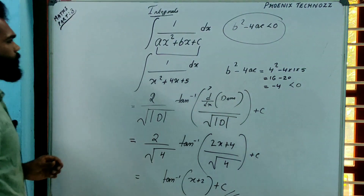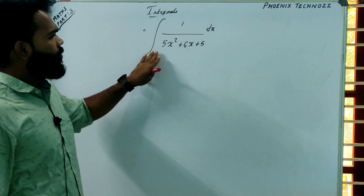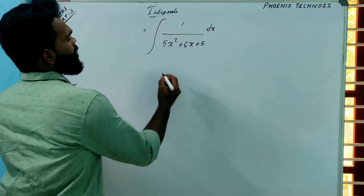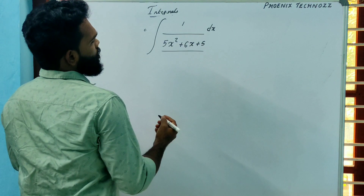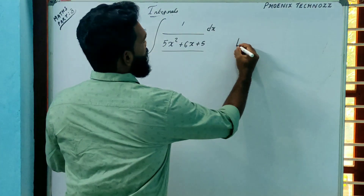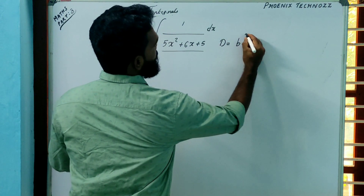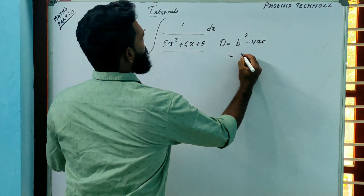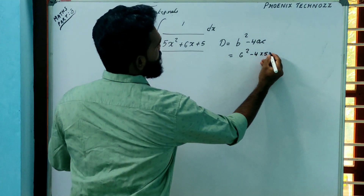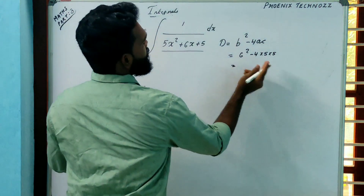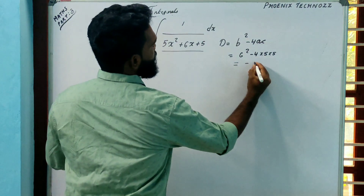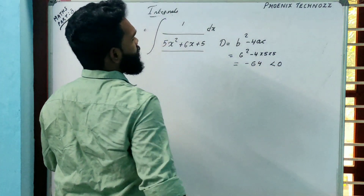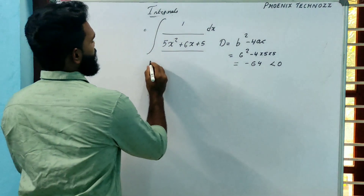Take another example: integral of 1/(5x²+6x+5) dx. The denominator is a quadratic equation, so first we find the discriminant D = b²−4ac = 6²−4(5)(5) = 36−100 = −64. Since b²−4ac is negative, we can apply the shortcut formula.